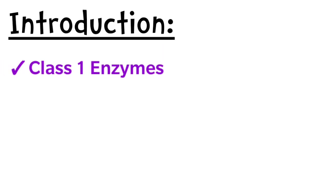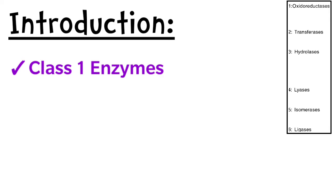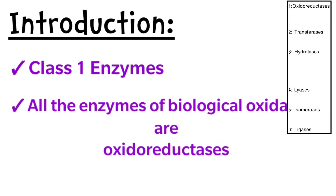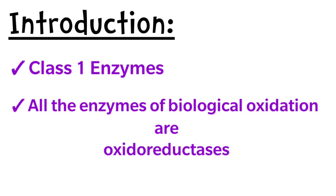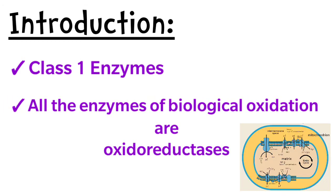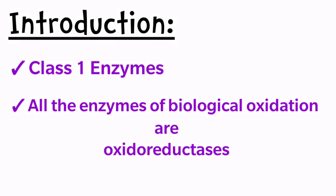Coming to introduction, these oxidoreductases are Class 1 enzymes. We know that enzymes are classified into 6 classes. The first class is oxidoreductases, and another important point is that the enzymes which are involved in biological oxidation — all those enzymes are oxidoreductases.